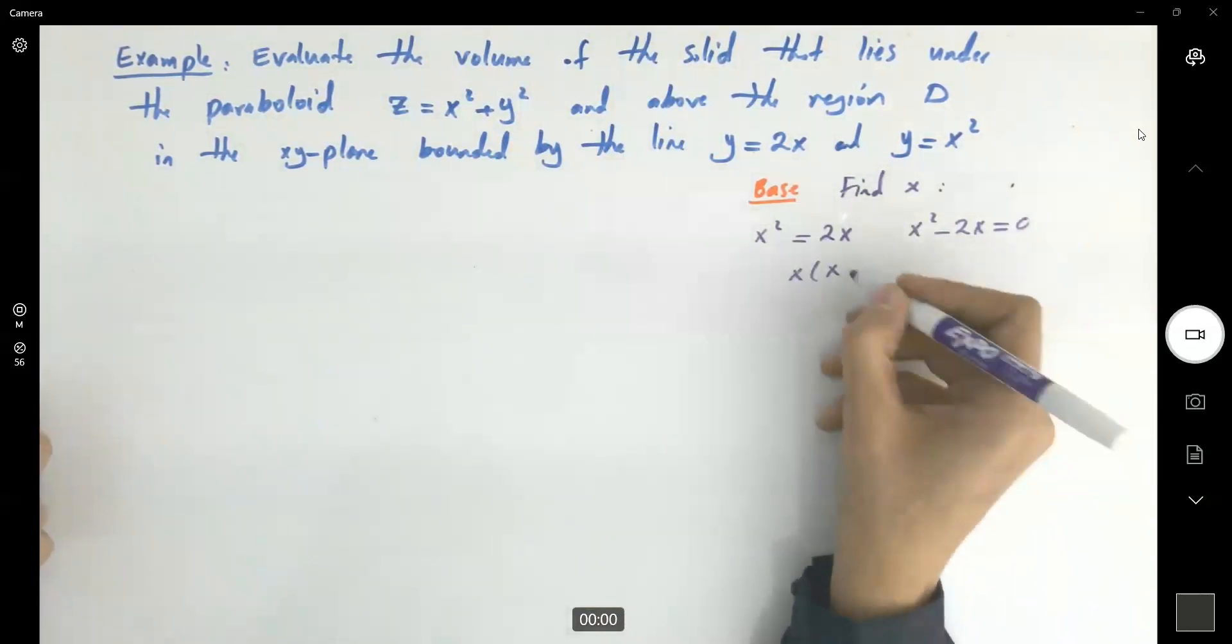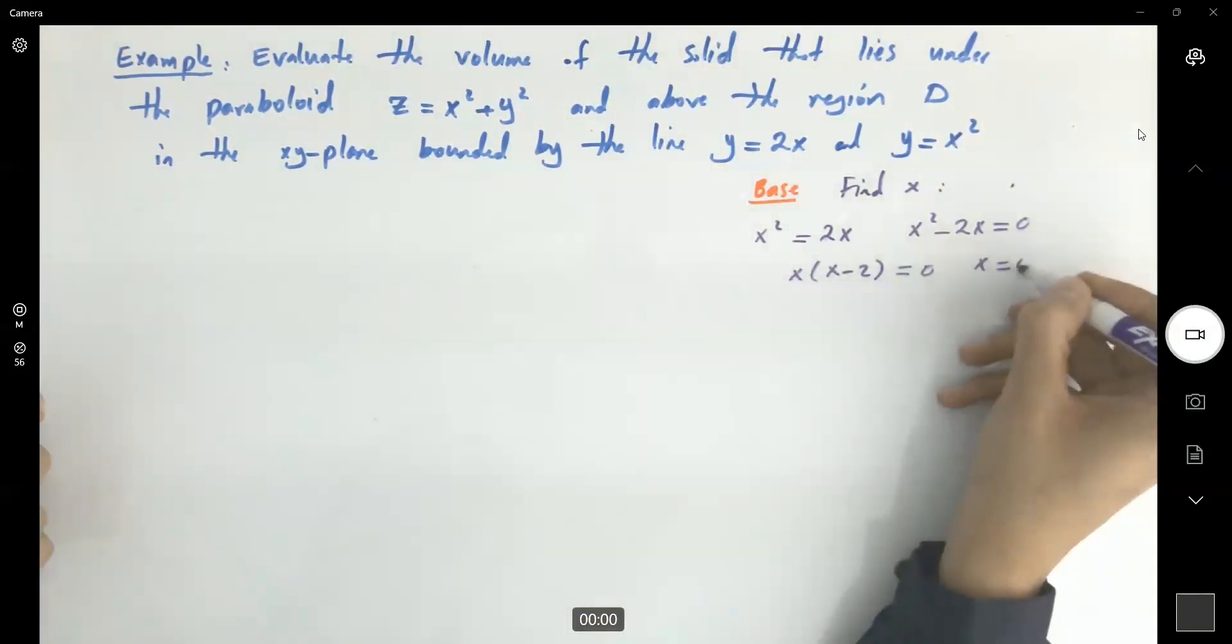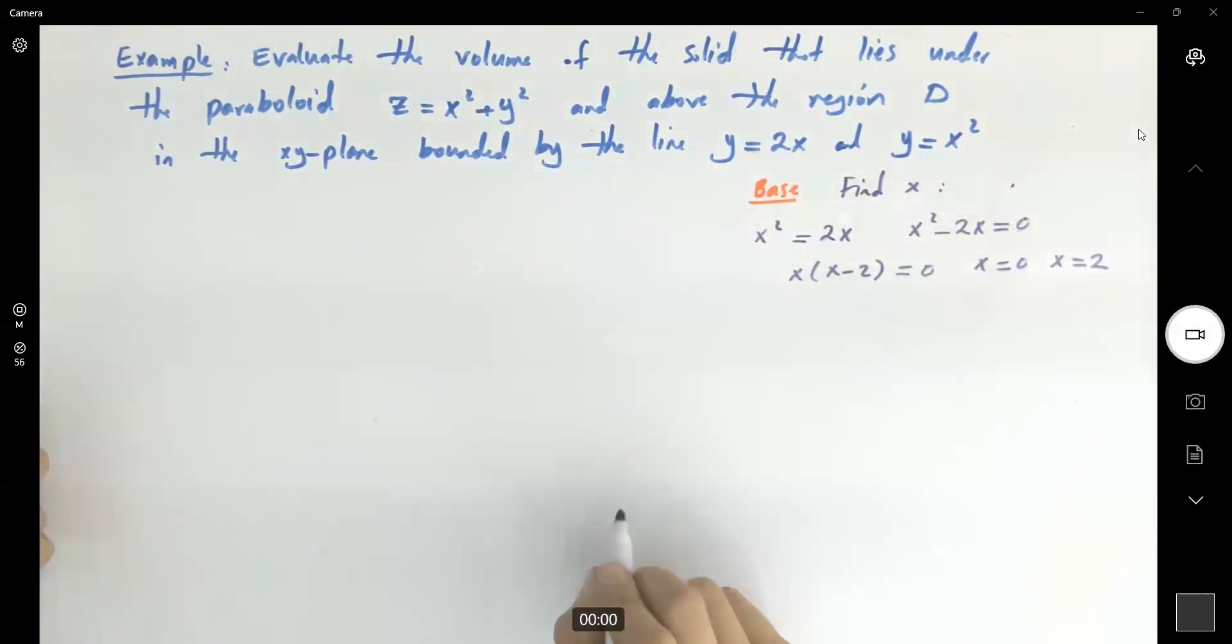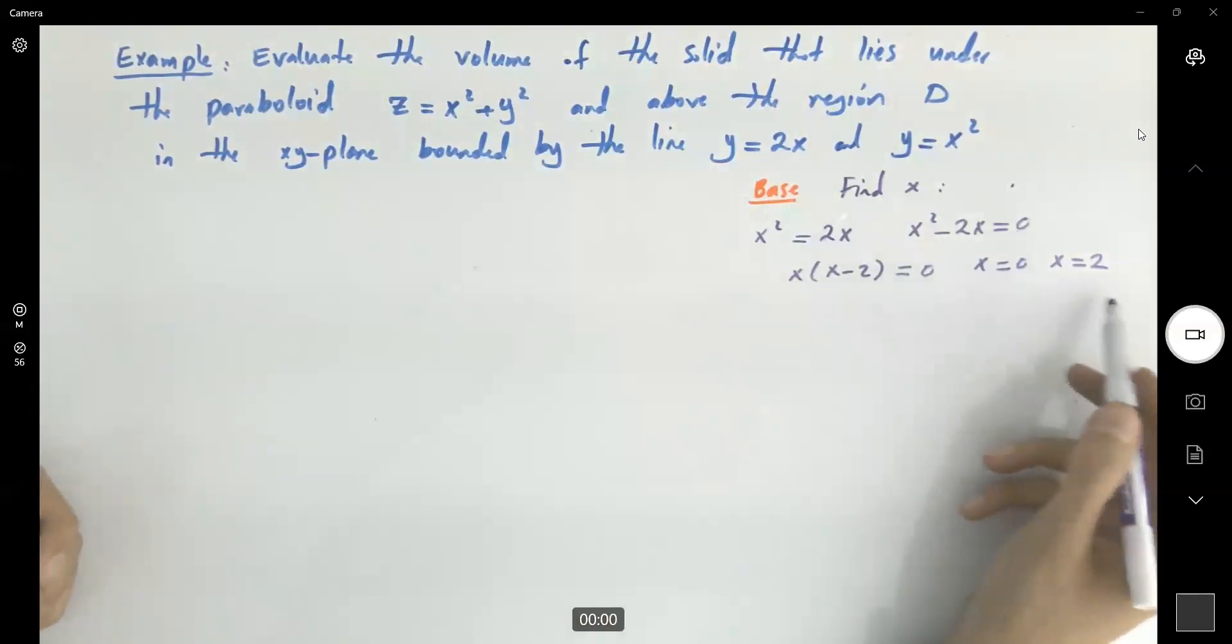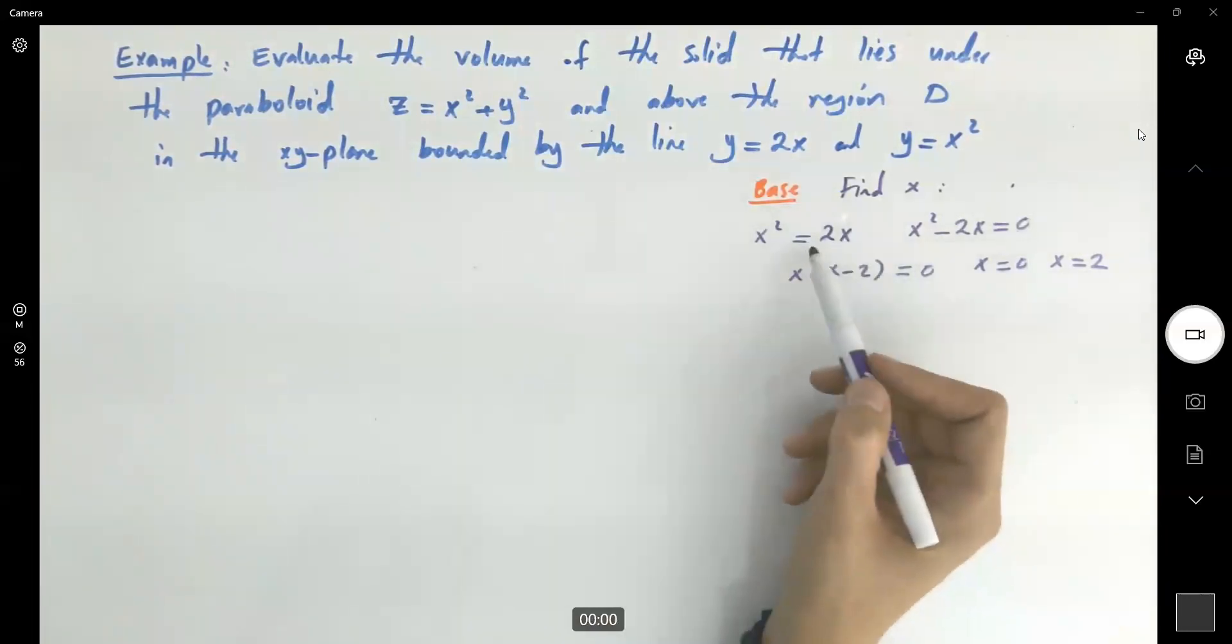If you find the value of x, just factor, x is 0, x is 2. So it seems like our x is bounded between 0 and 2, and your y is bounded between a line and a parabola.